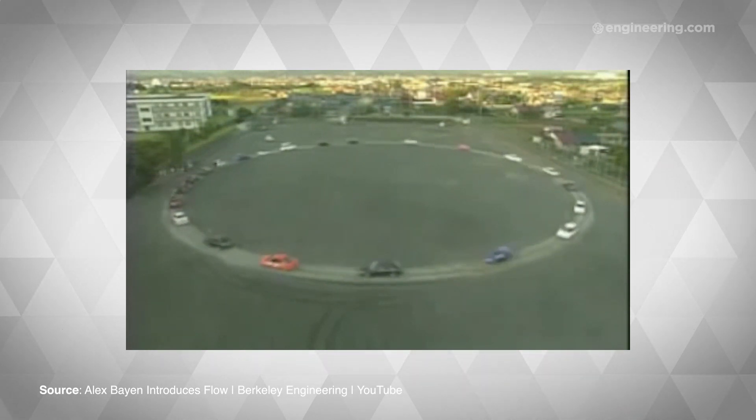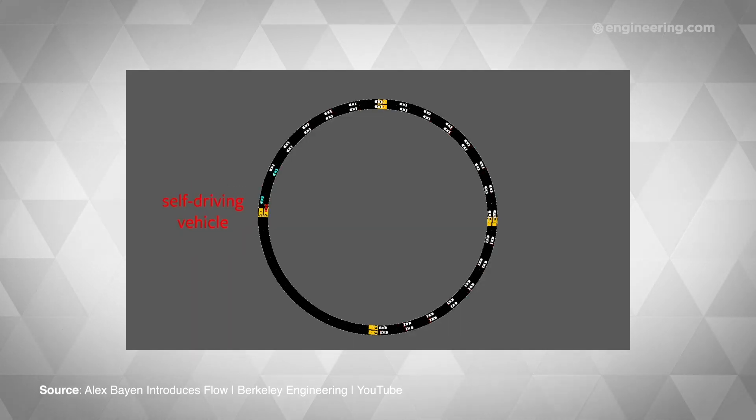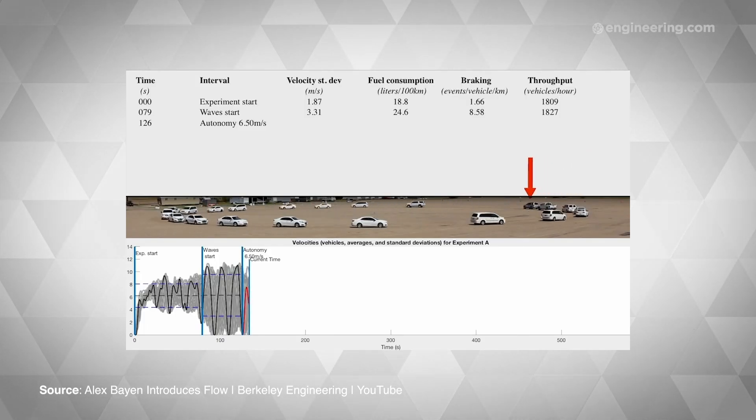However, add one autonomous vehicle controlled by FLOW and connected to nearby smart vehicles and infrastructure, and the situation changes dramatically.